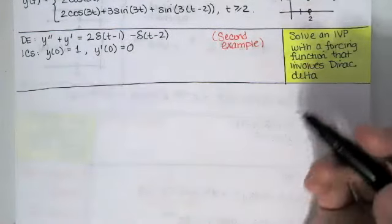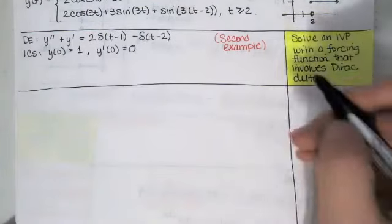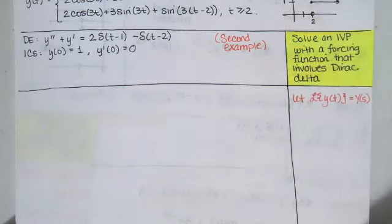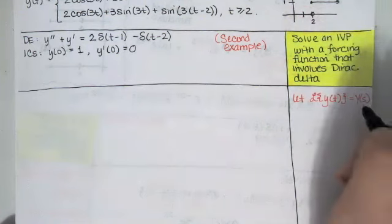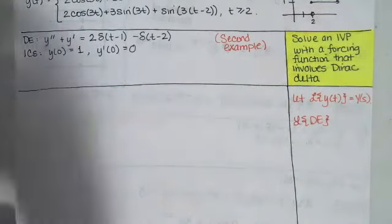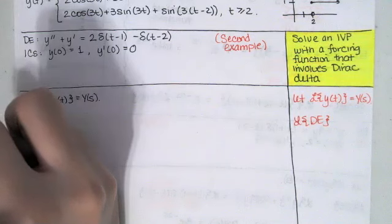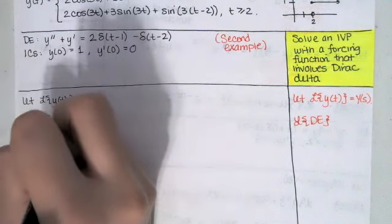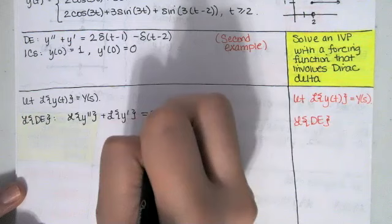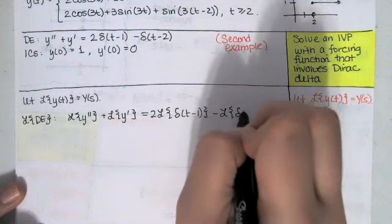We can figure that out using the Laplace transformation method. We start by introducing our notation: we don't want to leave the reader wondering where capital Y came from, so we define the Laplace transform of little y of t as big Y of s. Then we take the Laplace transform of the differential equation. We'll have the Laplace transform of y double prime plus the Laplace transform of y prime equals 2 times the Laplace transform of delta at t minus 1, minus the Laplace transform of delta at t minus 2.